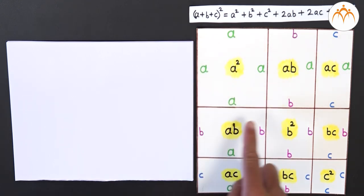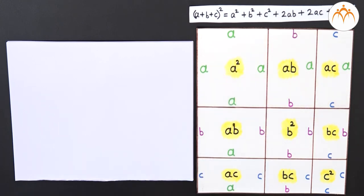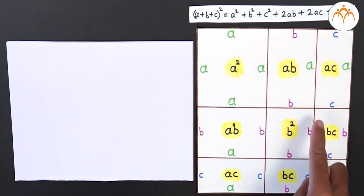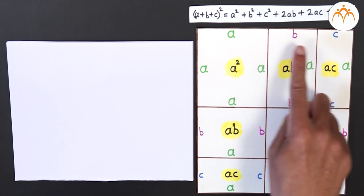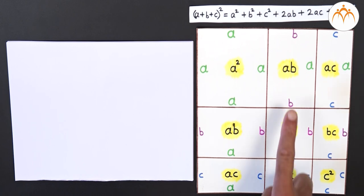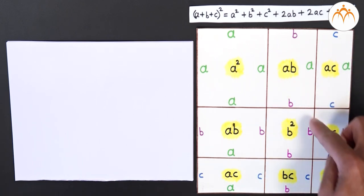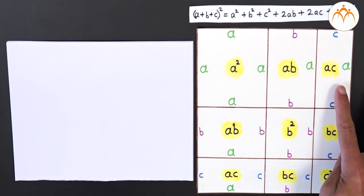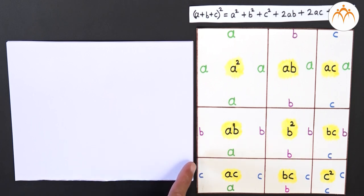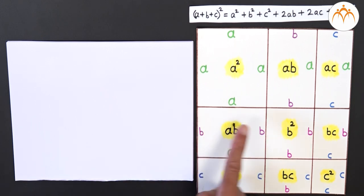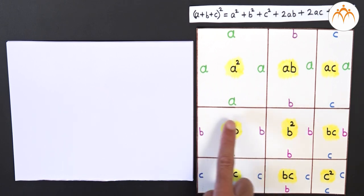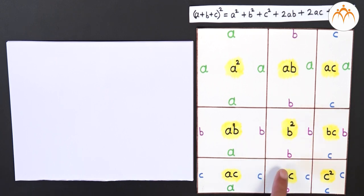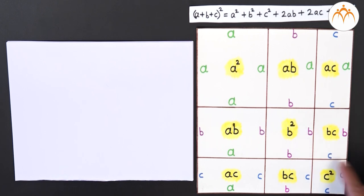This one is a square with side length a, so we have area a². The second one is a rectangle with length a and breadth b, so its area is ab. Similarly, this rectangle has length a and breadth c, so its area is ac. Here the length is b, so this rectangle has area ab. This is a square with side b, so it has area b², and the last one is a rectangle with sides b and c, so has area bc.